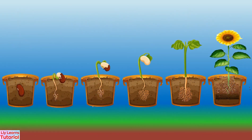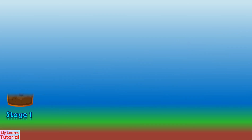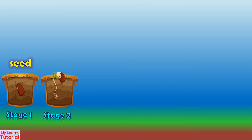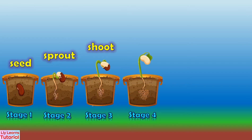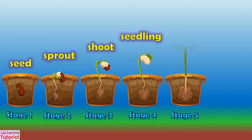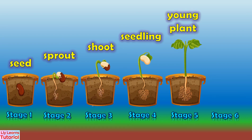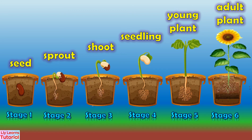Let's name the different stages of seed growth. Stage 1: Seed. Stage 2: Sprout. Stage 3: Shoot. Stage 4: Seedling. Stage 5: Young Plant. Stage 6: Adult Plant.